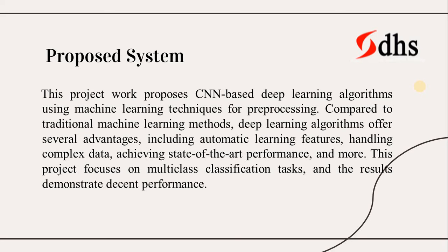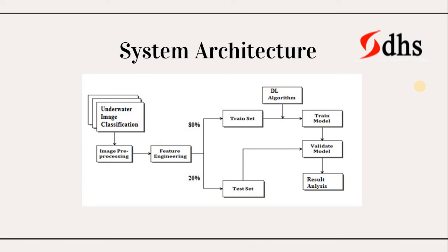Compared to traditional machine learning methods, deep learning algorithms offer several advantages including automatic feature learning, handling complex data, and achieving state-of-the-art performance. Regarding the system architecture: a historical dataset is very important for any data science and machine learning project. Here we have an underwater image dataset for classification, and we perform image preprocessing, feature engineering, and data splitting — splitting data for training and testing.